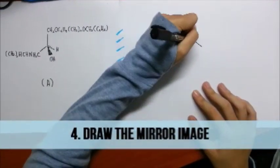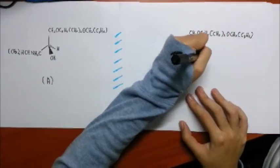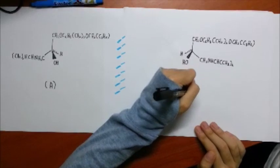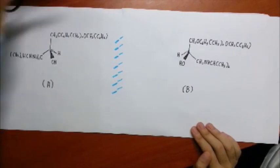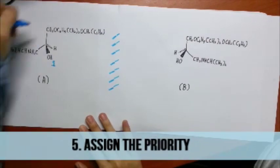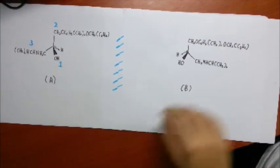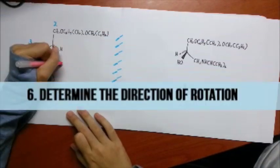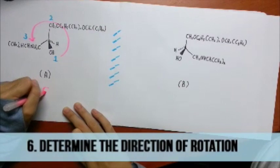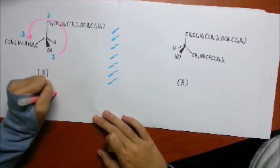Next, we draw the mirror image. Then we need to assign the priority of groups attached to the chiral center based on atomic number. After that, we determine the direction of rotation. If it is anti-clockwise, then it is the S configuration, and vice versa.